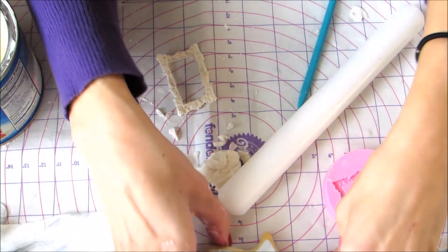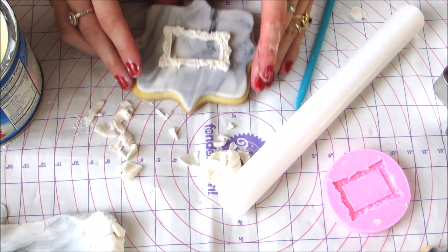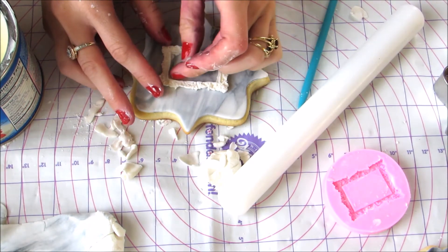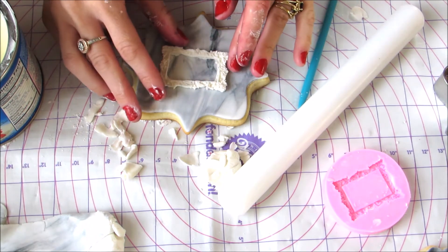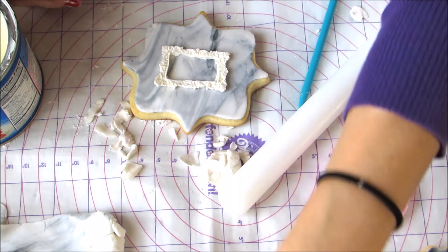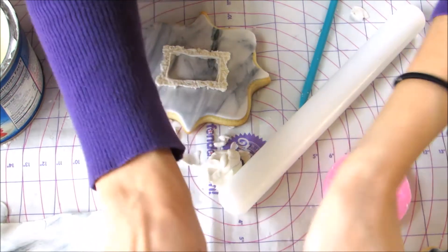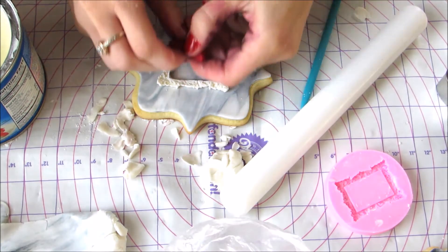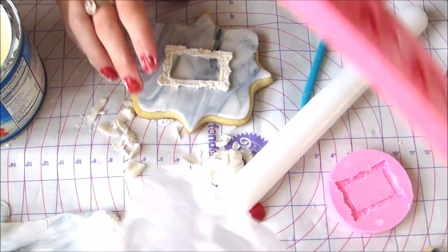This will be placed on my cookie, and to affix it I'll probably just use water or gum glue. The last thing I need to do is add my flower. I'm going to take some white—again, this is Satin Ice—and I'm going to take a mold I have with a small flower in the center.